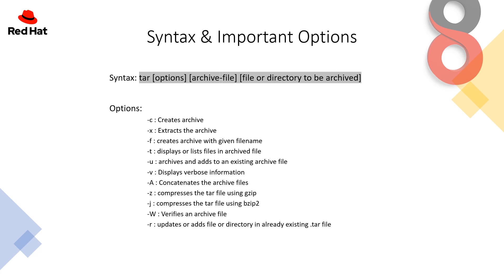-v displays verbose information — if you mention -v it will list out the current status, like which file is archiving and where it got stuck. -a concatenates the archive files. -z compresses the tar file using gzip. -j compresses the files using bzip2 — these are the two algorithms we discussed earlier. -w verifies an archive file. -r updates or adds a file or directory to an already existing tar file.